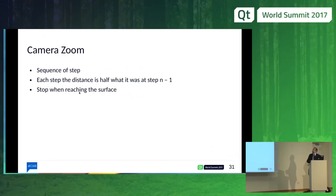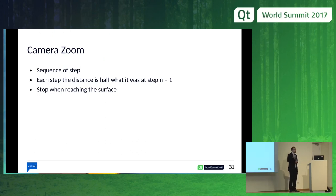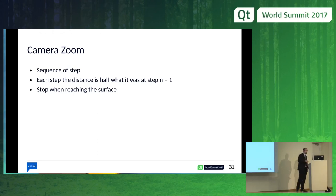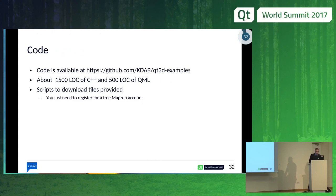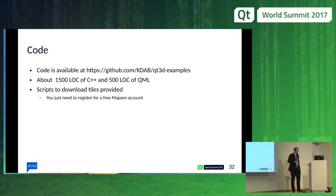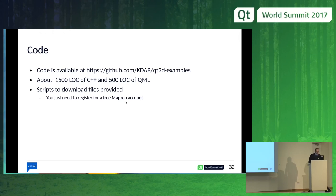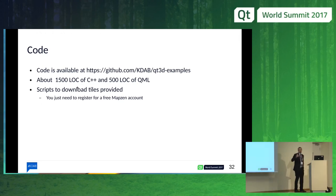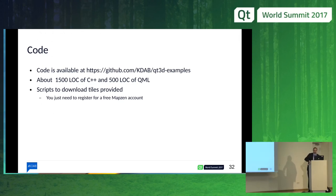For camera zoom, I created a sequence: every time you increase the value, you move the camera by half its current distance, so as you move closer you're always moving half the remaining distance at each step. The code should be available on the GitHub address — maybe not right now, but at least tomorrow. There's actually not that much code — about 2,000 lines of C++ and QML in total. If you want to use it, I've provided scripts to download satellite images and elevation images. You just need to create a free Mapzen account, use the script, and specify the zoom level you want.